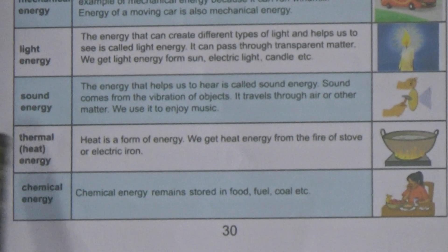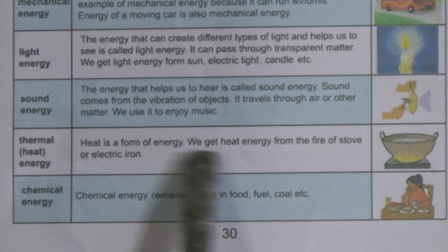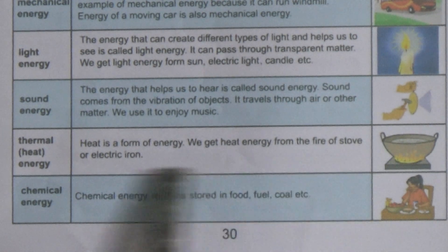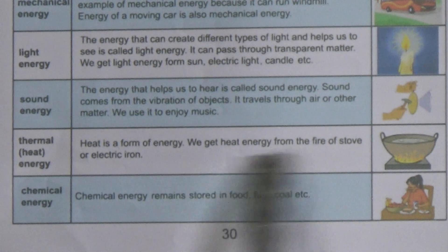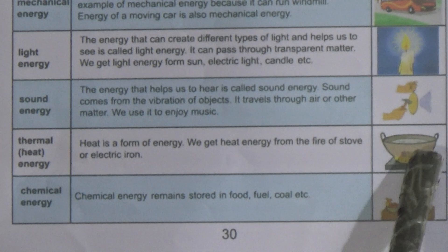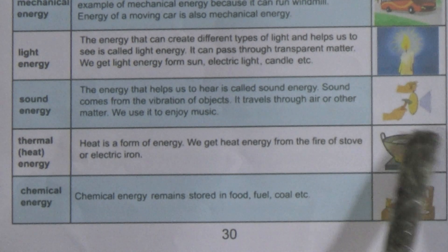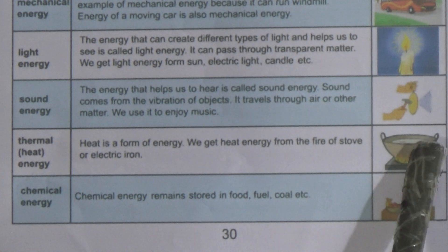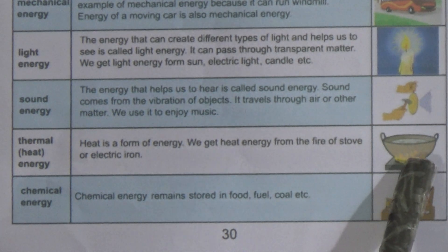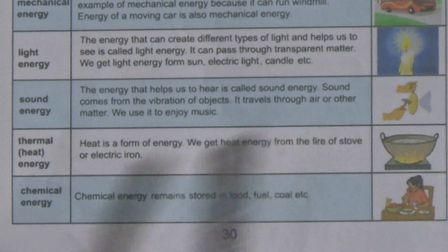Now come to thermal or heat energy. Heat is a form of energy. We get heat energy from the fire of stoves or an electric iron. The example shown is the fire of a stove and a pan being heated through it.